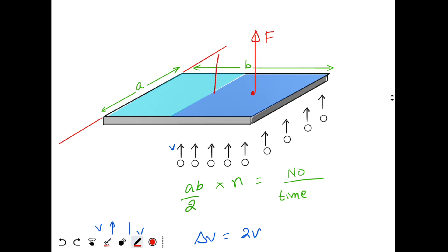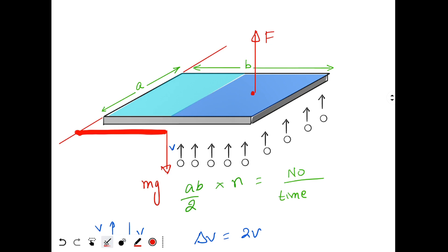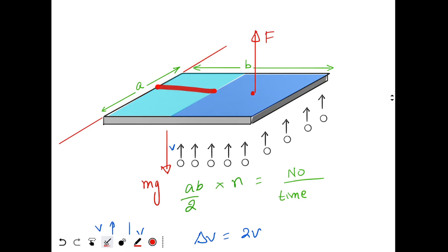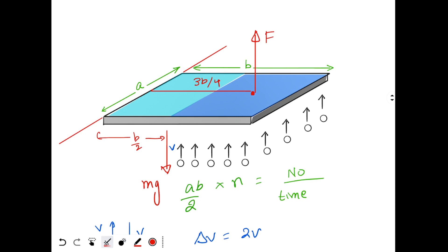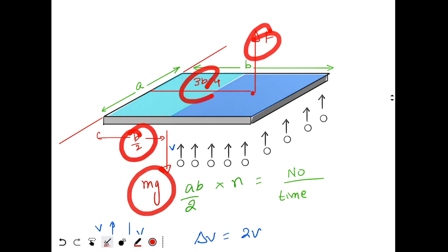The weight mg acts at the center of the plate. The distance of mg from the hinge is B/2. The force F acts at the center of the shaded region, which is at a distance of B/2 + B/4 = 3B/4 from the hinge. For equilibrium, the two torques must balance each other, so: mg × (B/2) = F × (3B/4).